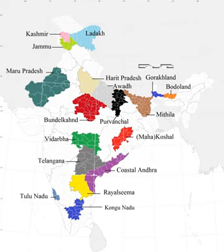The agitation for the creation of a separate Bodoland state resulted in an agreement between the Indian government, the Assam state government and the Bodo Liberation Tigers force. According to the agreement made on 10 February 2003, the Bodoland Territorial Council, an entity subordinate to the government of Assam, was created to govern four districts covering 3,082 Bodo Kachari-majority villages in Assam. Elections to the council were held on 13 May 2003, and Hagrama Mohillari was sworn in as chief of the 46-member council on 4 June.